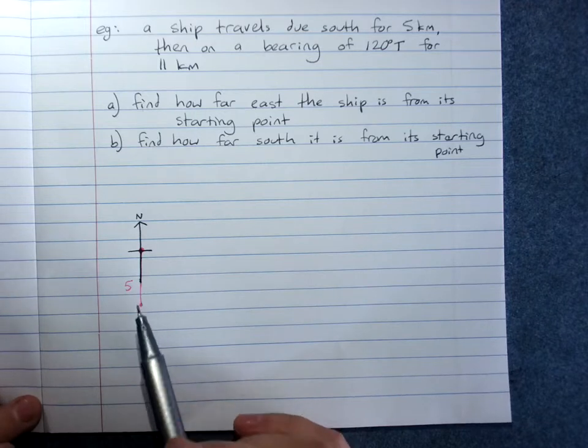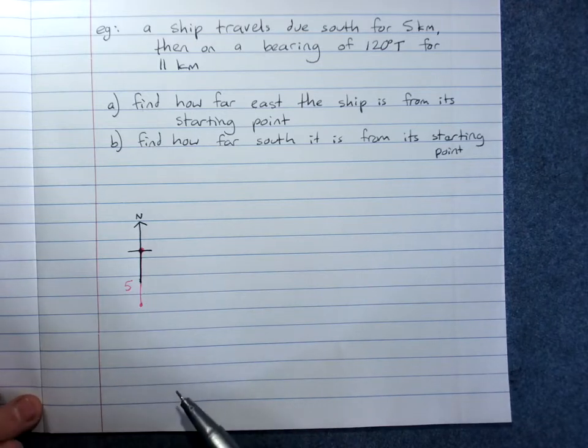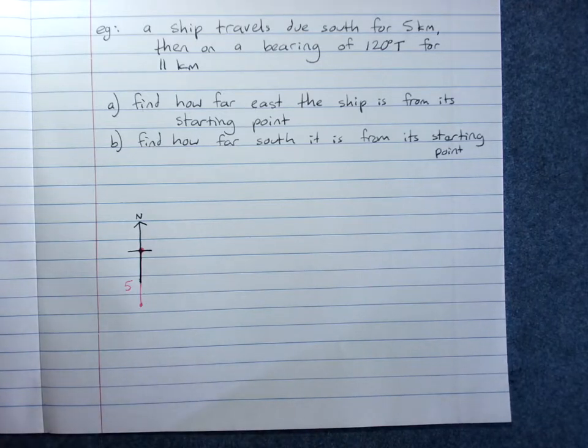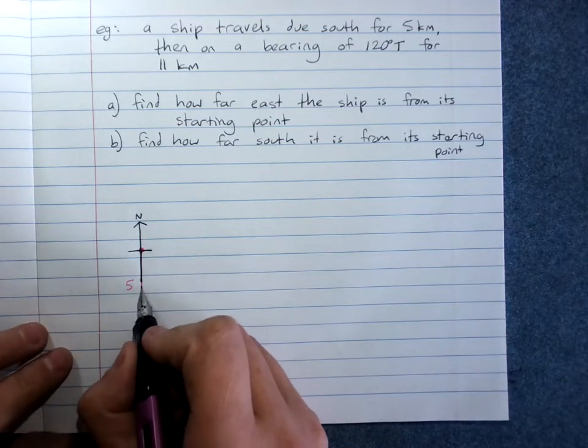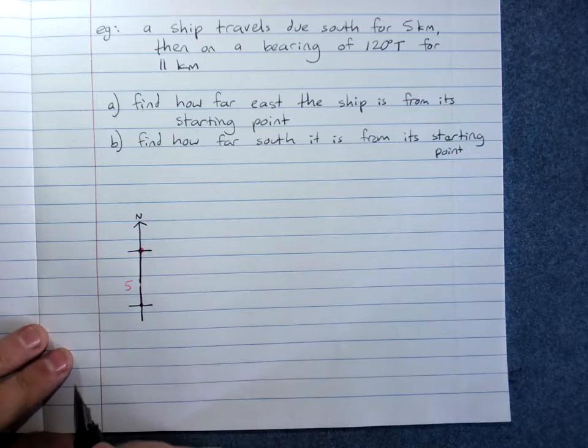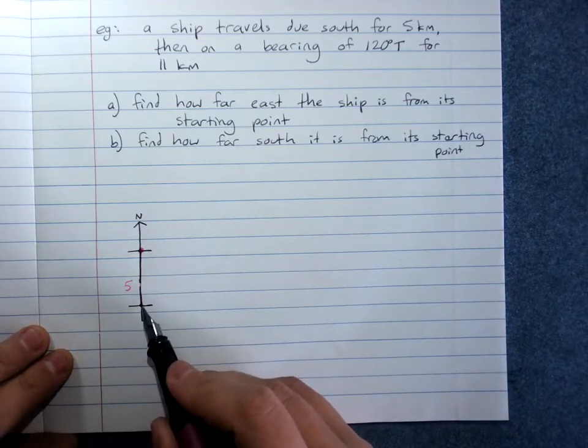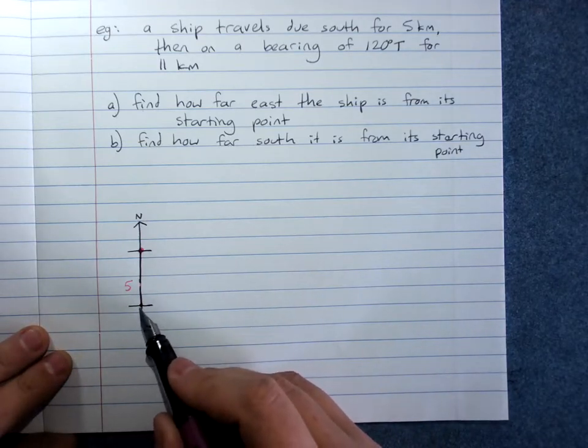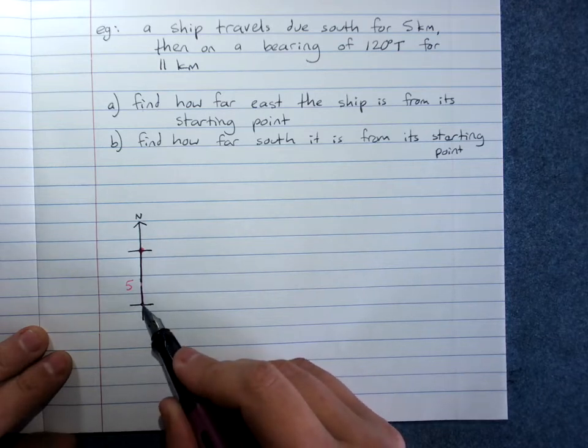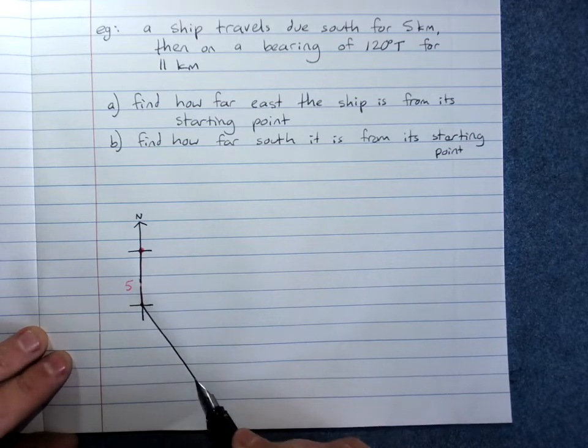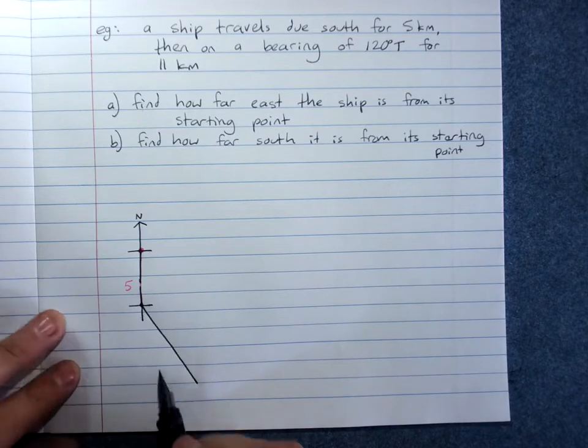Then on a bearing of 120 degrees true for 11 kilometres. Now, if you change bearing, chances are you'll draw another little compass rose. Because from here, they went at 120 degrees true for 11 kilometres.